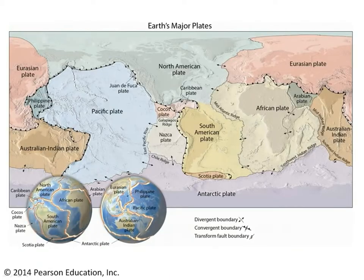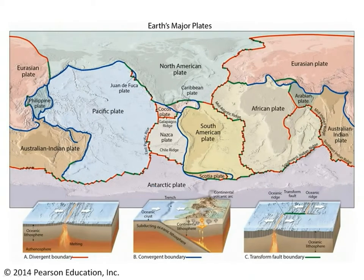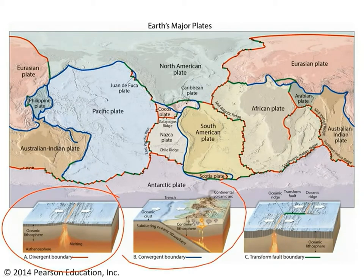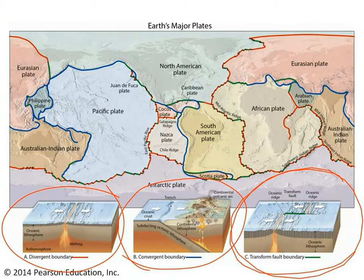You'll recall that the outermost rocky layer of the Earth's surface is broken into a series of slabs that we call plates, and these plates move around relative to one another. The boundaries between the plates come in basically three flavors: the plates can either be moving apart from one another, in which case we call them divergent plate boundaries; they can be moving towards one another, in which case they're convergent plate boundaries; or they can be sliding past one another, in which case they're called transform plate boundaries — and that's going to be the focus of this video.